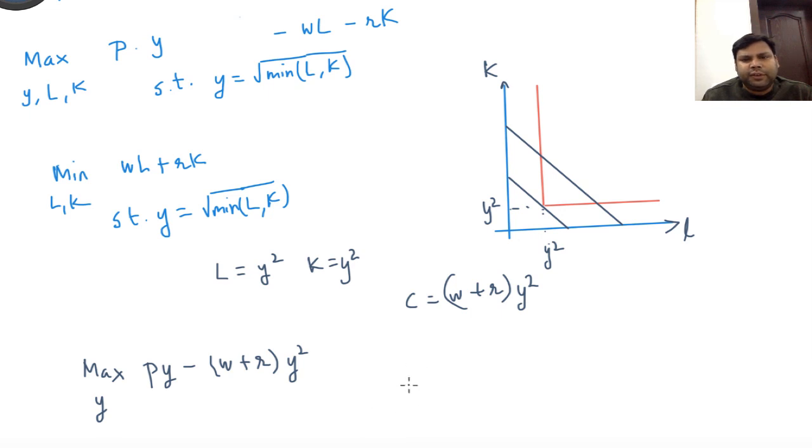Set the derivative equal to zero to get the profit maximizing choice. So we are going to get P minus (W plus R) into 2Y equal to zero. So Y equals P divided by two times (W plus R). This is the firm's supply function.